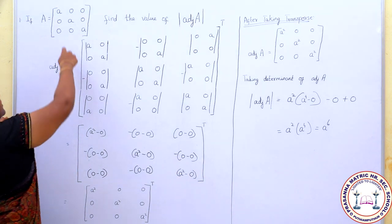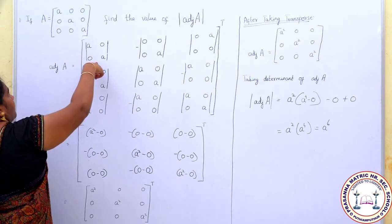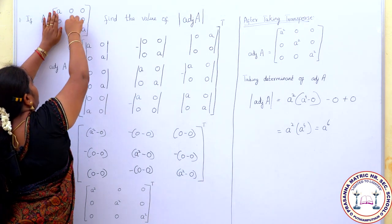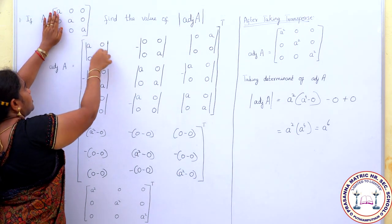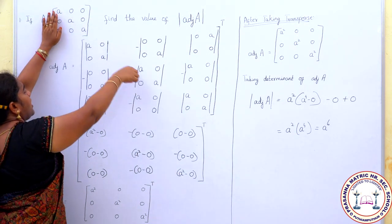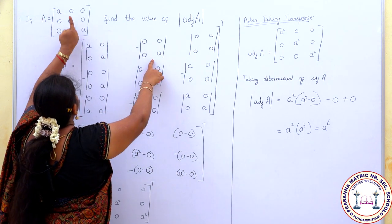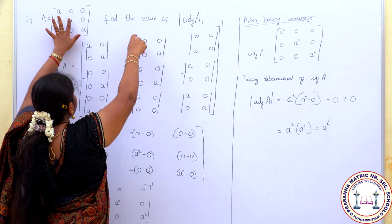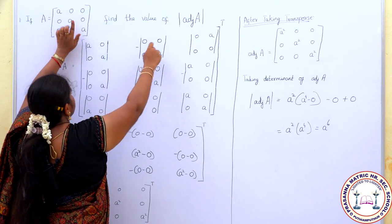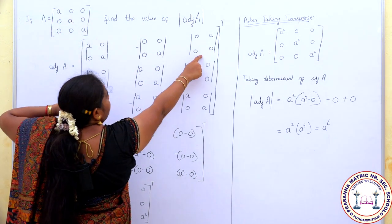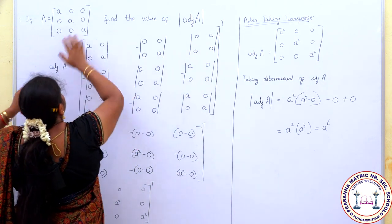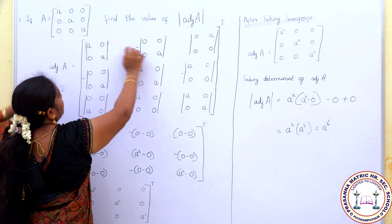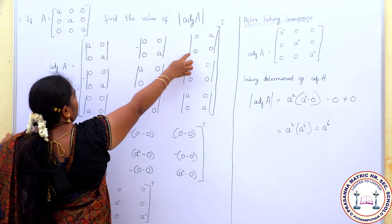For the first cofactor, leave the first column and first row and write the remaining elements. For the second cofactor, leave the second column and first row and write the remaining elements. Similarly for the third cofactor, leave the third column and first row and write the remaining elements.